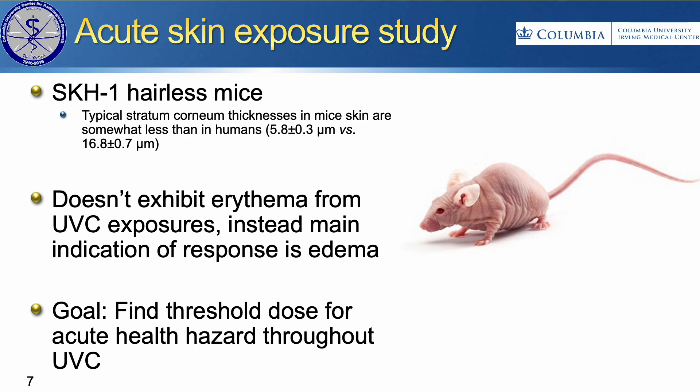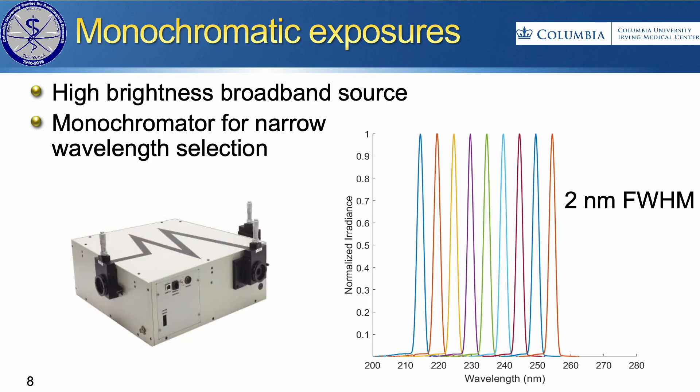We're currently in the middle of a safety study to systematically evaluate the wavelength dependence of acute skin hazard. This is just one component that would be factored into the TLV, but it is a very important one. For these studies, we're using a hairless mouse model — this is an SKH1 mouse — which has been used for previous studies of erythema and non-melanoma skin cancer. It's a very established model, and because it has no hair, we can directly expose the skin and evaluate for damage.